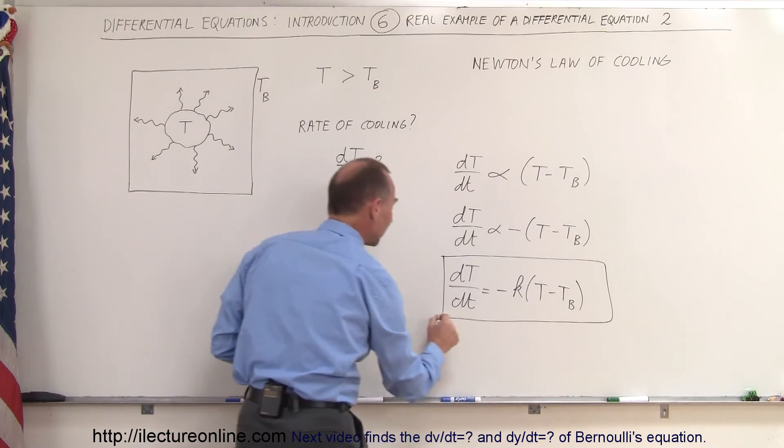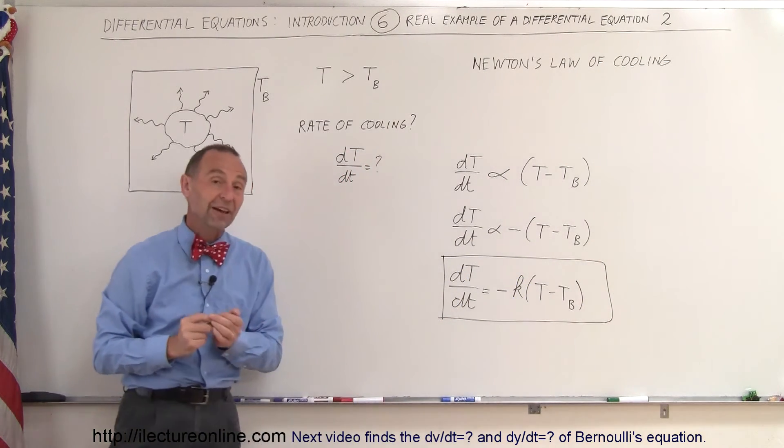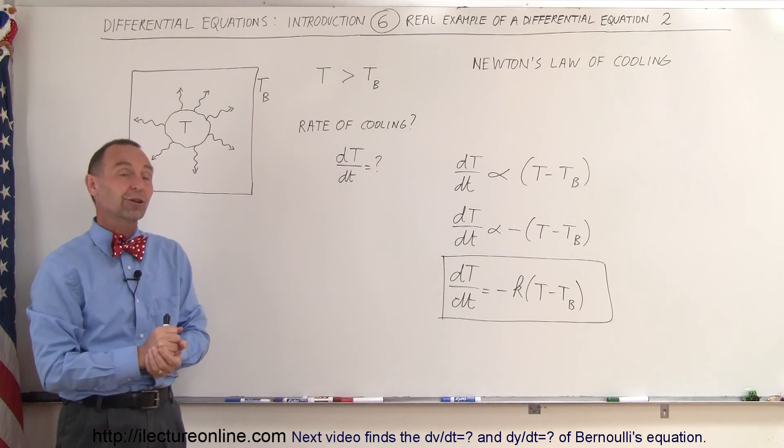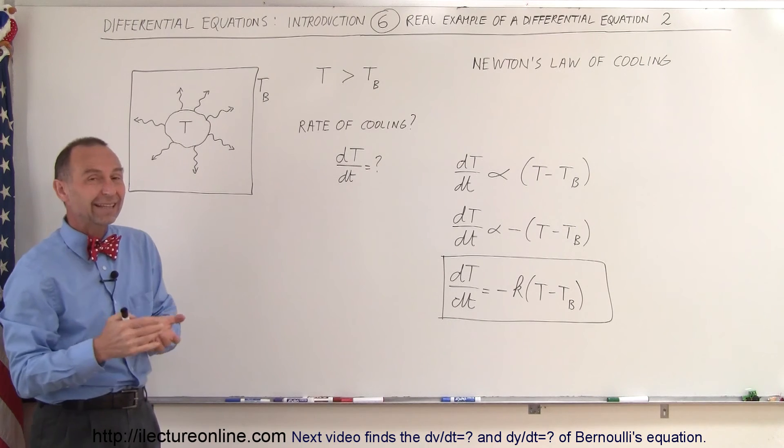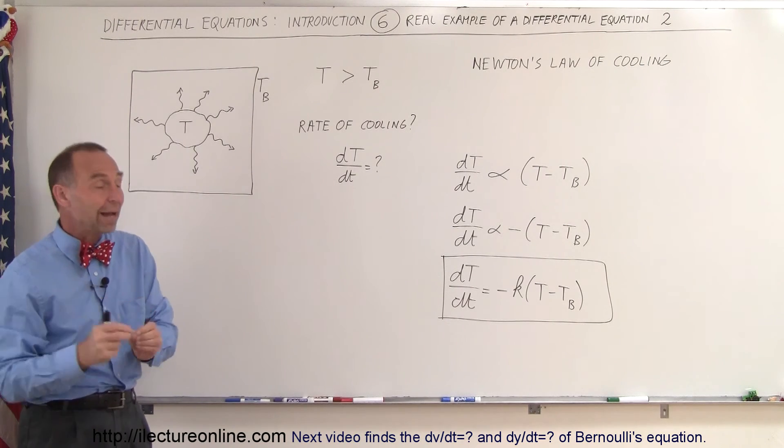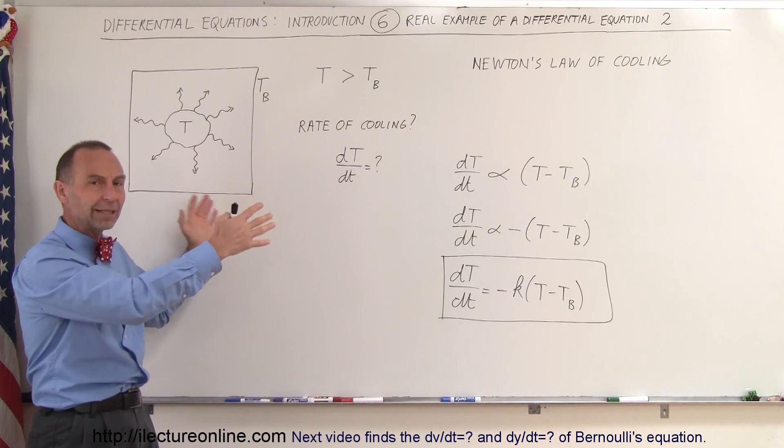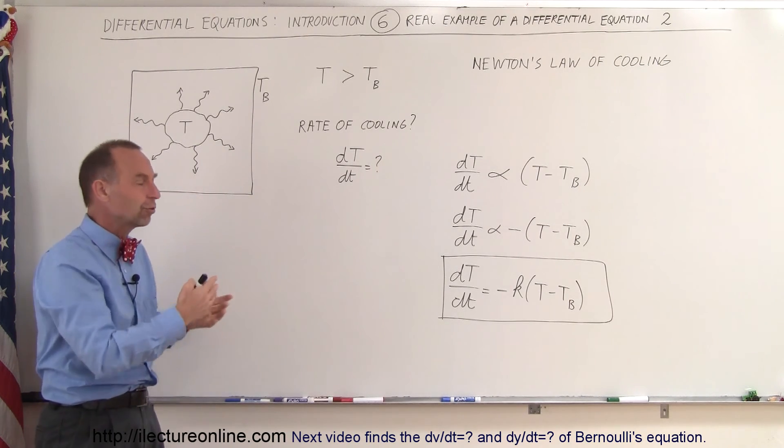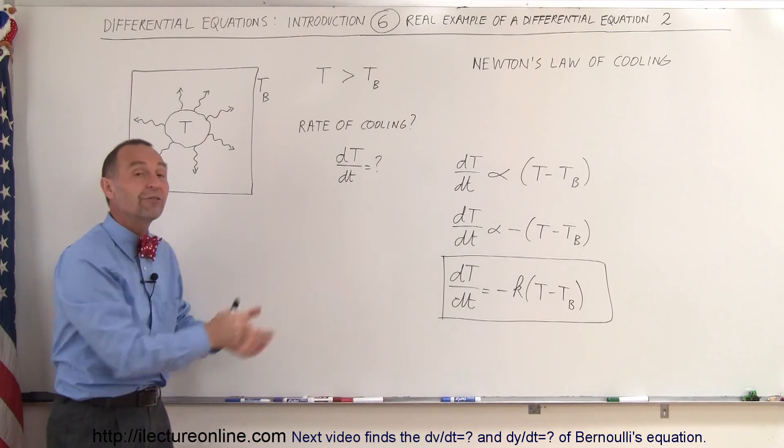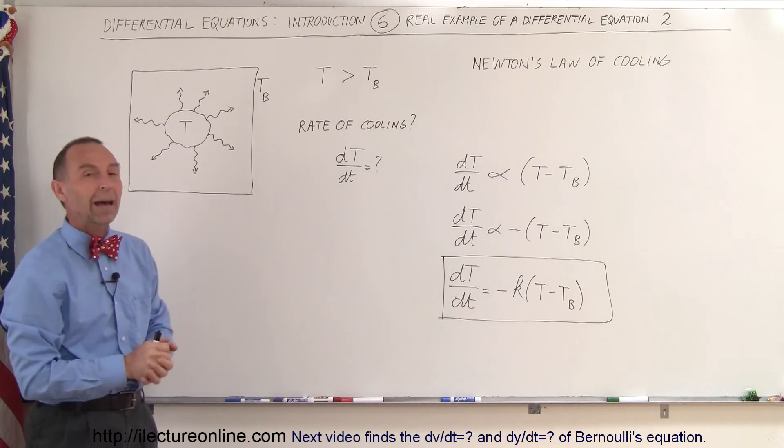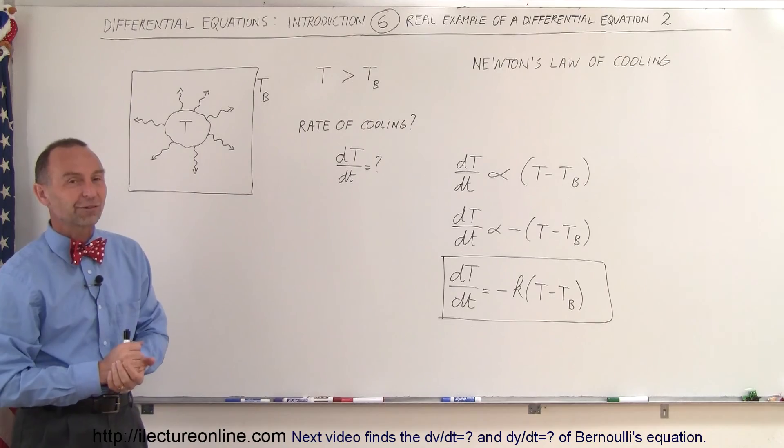And that then would be the mathematical way of explaining how fast the object would be cooling. And again, that is what we call a first-order differential equation. So you can see that differential equations are actually very practical. And there's many different ways in which we can take a real-life example in nature, in physics, in chemistry, and so forth, and turn it into a differential equation to explain physically or mathematically what is happening in the real world. And there's another example for you.